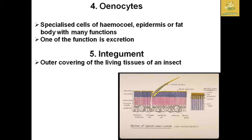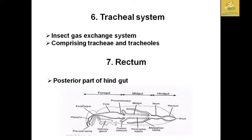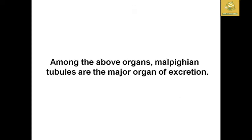The fourth organ is oenocytes — specialized cells of the hemocoel, also associated with the epidermis or fat bodies. One of their main functions is excretion. The fifth organ is the integument — the outer covering of living tissue in an insect, which also plays an important role in excretion. The sixth is the tracheal system, which comprises tracheae and tracheoles for gas exchange. The seventh organ is the rectum, which is the posterior part of the hindgut and also takes part in excretion.